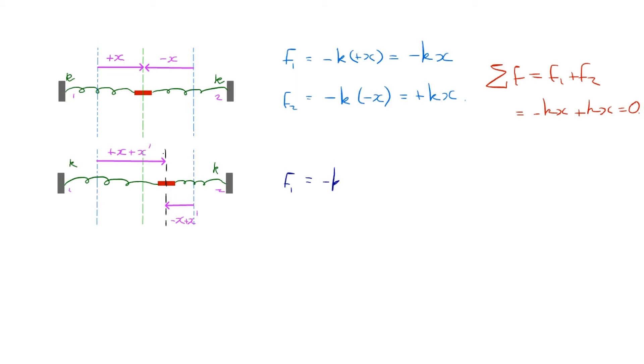F equals minus kx, so it's minus k times the displacement. But the displacement this time is plus x plus x dash. And for the force due to spring 2 is minus kx, where x is the displacement. But the displacement this time is minus x plus x dash. So, I can simplify these and get rid of the brackets. So, I get minus kx minus kx dash. And if I expand the brackets in the bottom example, I get plus kx minus kx dash.